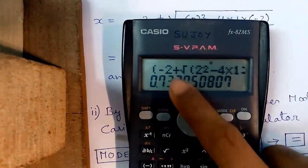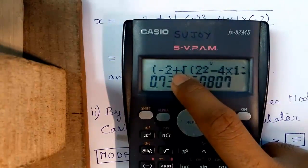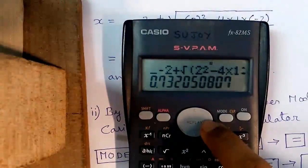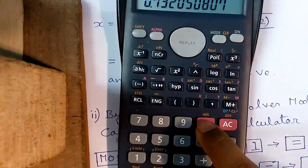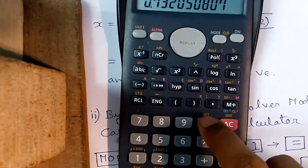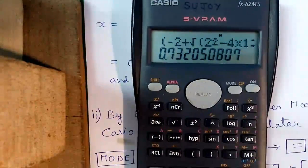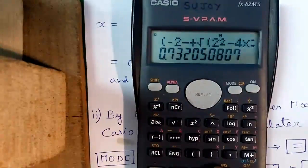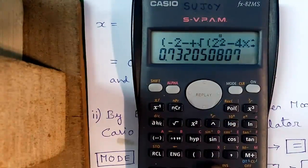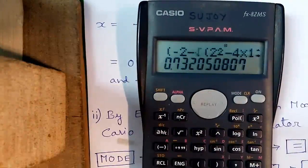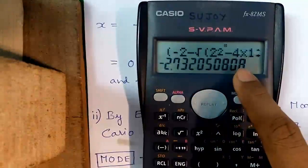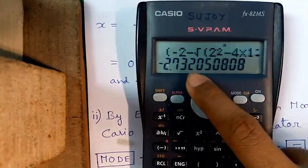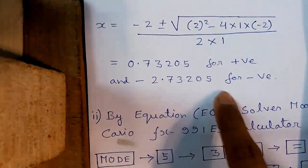Now we will find out the negative root. For that we will simply replace the plus sign with the minus sign. Press the joystick right, then press Shift and the Del button for the insert operator — above Del there is Ins, for insert. Insert the minus sign, then cancel the insert operator by pressing Shift and Del, and press the Del button to delete the plus sign. So the plus sign is replaced by the minus sign. Press equals. This gives us the negative root, that is minus 2.73205.